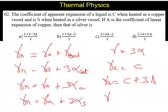Similarly, for the case of real expansion in the case of a silver vessel, when liquid is heated, it is going to be S plus 3 alpha, where alpha is the coefficient of expansion of silver.